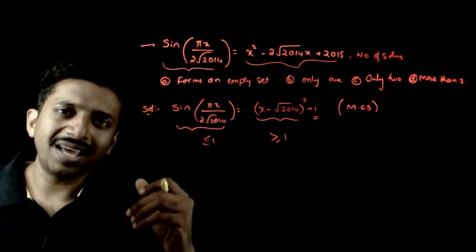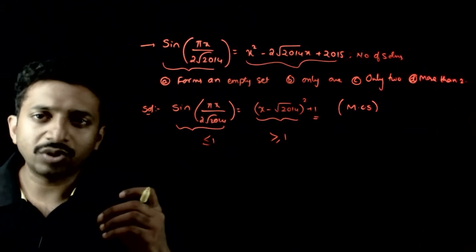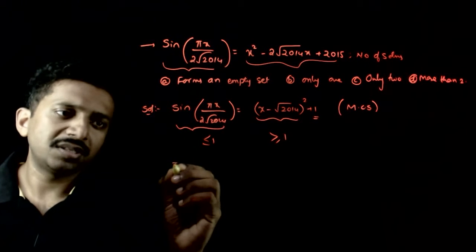So dono equal hone ke liye, both of them have to be equal to 1. This implies both sides equal to 1 hona chahiye.